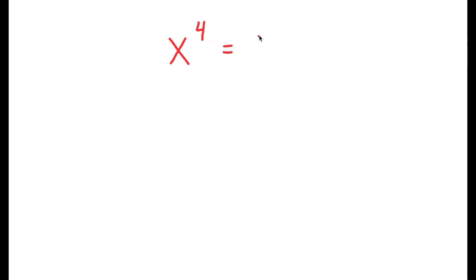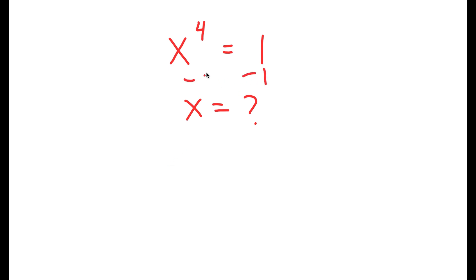In this video, I'm going to solve the equation x to the power of 4 is equal to 1. To solve this, I need to find the value of x. So I'm going to subtract 1 on both sides, so I get x to the power of 4 minus 1 is equal to 0.